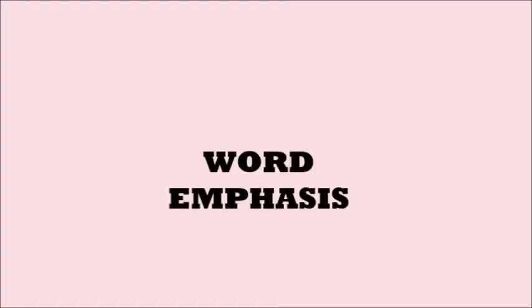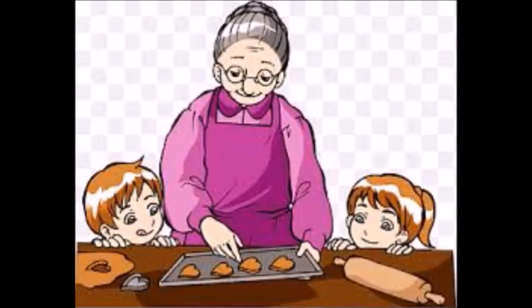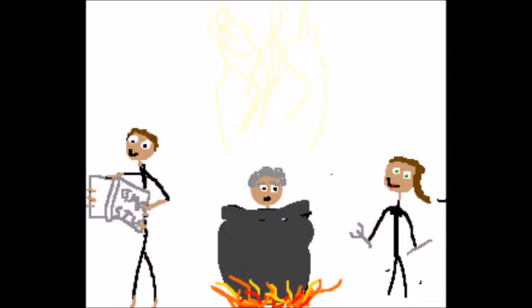Here's another classic example of how word emphasis can change the meaning of a statement. The sentence, let's eat, grandma, has a comma after eat, which means we emphasize or stress the word eat. If we put the accent or the stress on the word eat, it sounds like this: Let's eat, grandma — it sounds like you're calling your grandma to eat. If you put the accent or stress on the word grandma, however, it sounds like this: Let's eat, grandma — which sounds like you want to eat your grandma. And that's not good.